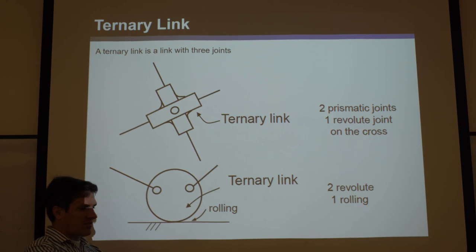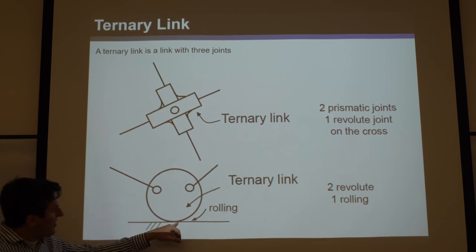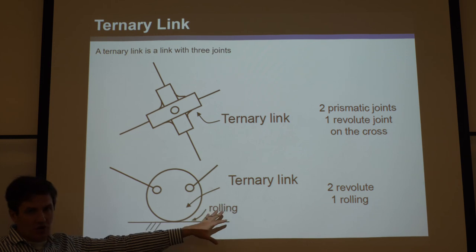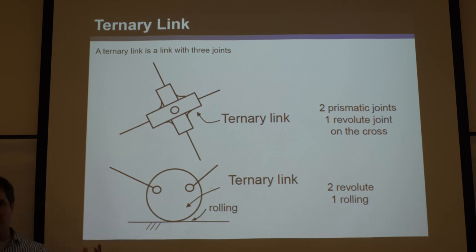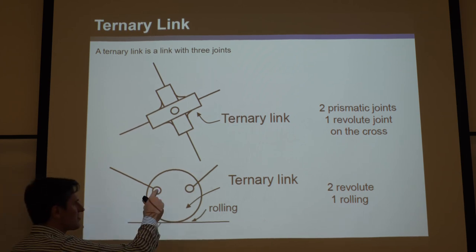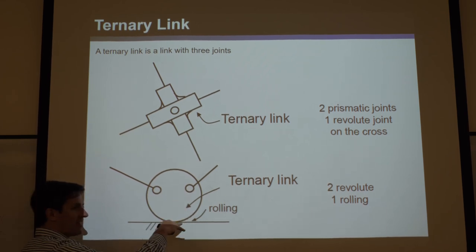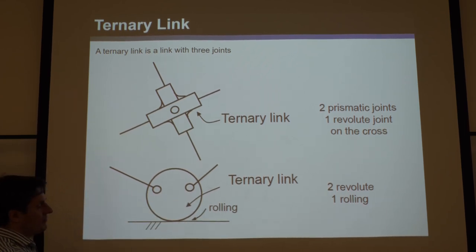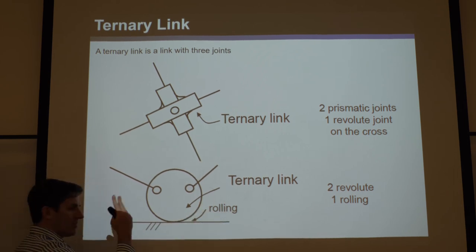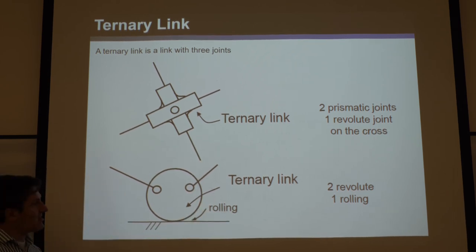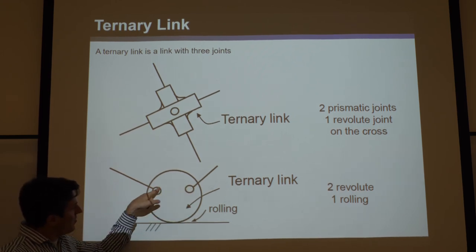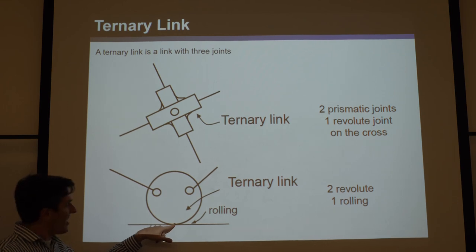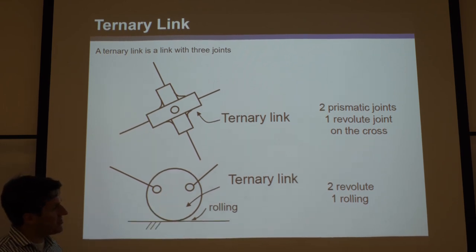For a circular link like a gear connected to a grounded point by hatching and to two other links by revolute joints: whether it says 'rolling' or not, if rolling isn't specified, it could roll and slide, giving two degrees of freedom. But degrees of freedom don't determine the link classification — what matters is the number of joints. With one joint at the ground contact and two revolute joints for the other links, that's three joints total — a ternary link.